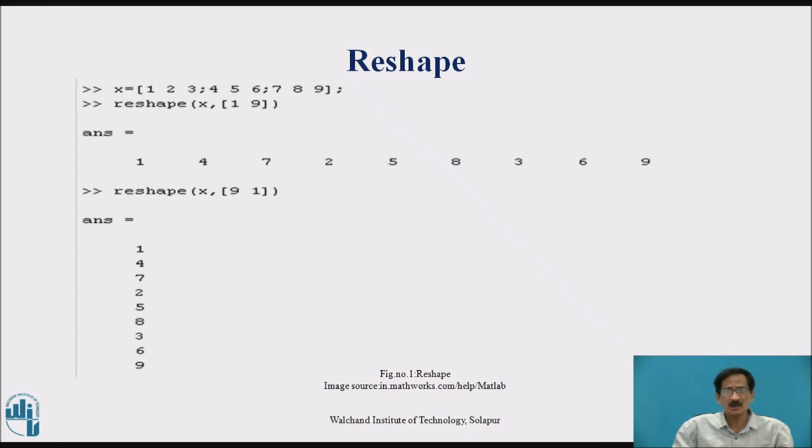Reshape X comma 1 to 9 will reshape the 3 by 3 matrix into a matrix of size 1 row and 9 columns. So the answer is 1, 4, 7, 2, 5, 8, 3, 6, 9.